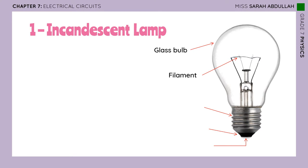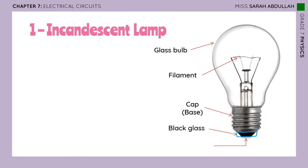We call it a filament wire — this is called a filament. It is a very thin wire. Then you have this part right here, called the base or the cap. And then you have this black part, which we call black glass. And then the last part right here is called the central pin or the pad.